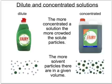Let's start by looking at what dilute and concentrated mean. A concentrated solution is one which has got an awful lot of solute and not so much solvent in it, whereas a dilute solution has a lot of solvent and not very much solute. You can convert between the two by adding more solvent — usually water. So a more concentrated solution has more crowded particles, and adding more solvent particles makes it more and more dilute.